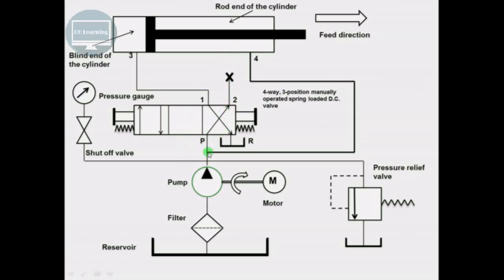The fluid from this line enters into the rod end of the cylinder and causes retraction. The liquid from the blind end of the cylinder from port 3 enters over here, and from port 1 it goes to port R (reservoir).